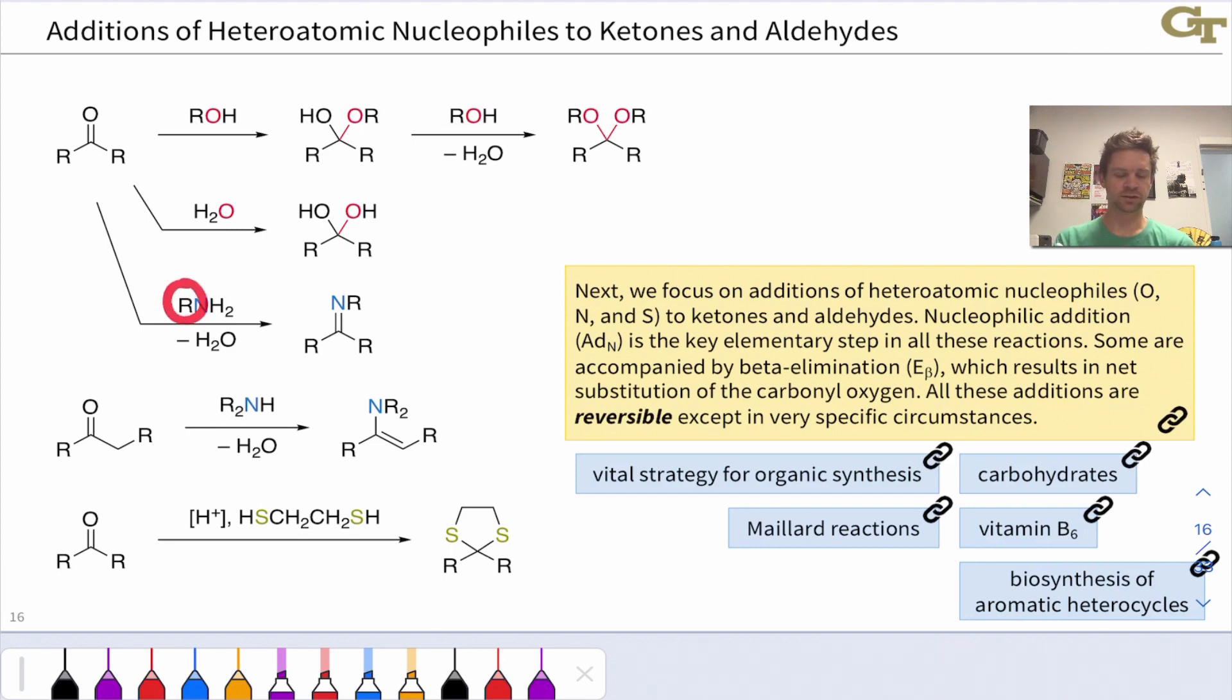Primary amines, which contain one R group linked to the nitrogen, react with ketones and aldehydes to give what are called imines with a C=N double bond, while secondary amines with two R groups linked to the amino nitrogen react to give enamines, which contain a C=C double bond linked to a nitrogen group or amino group.